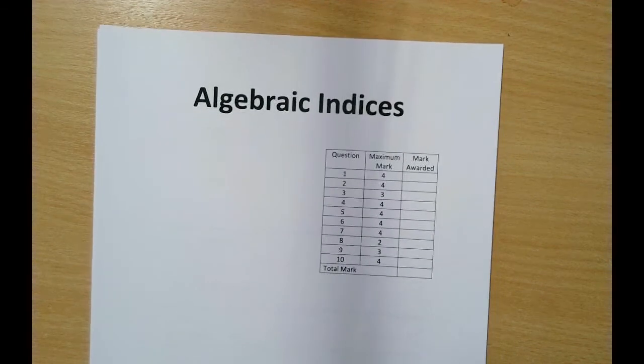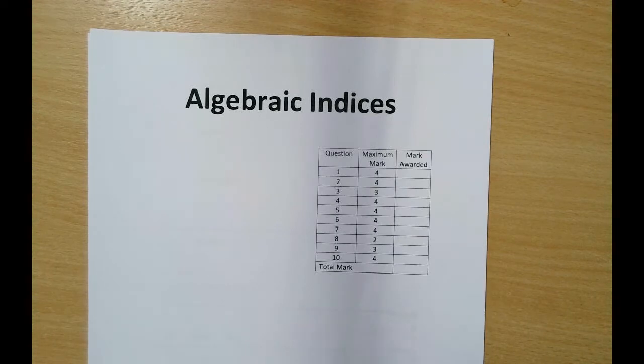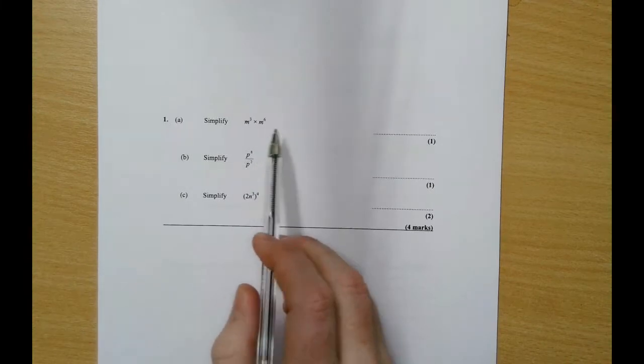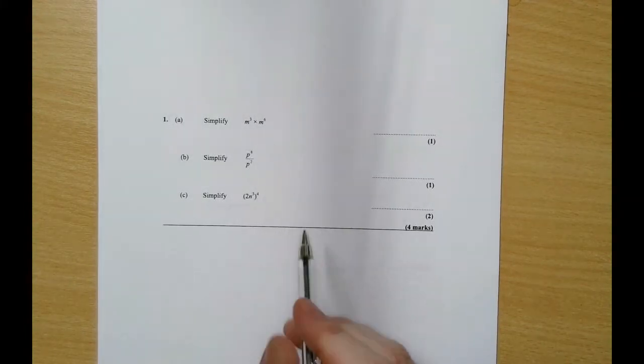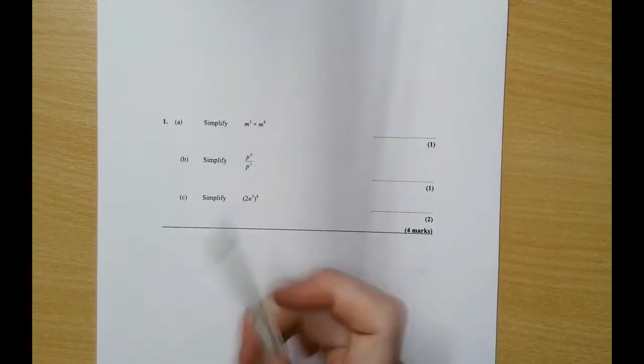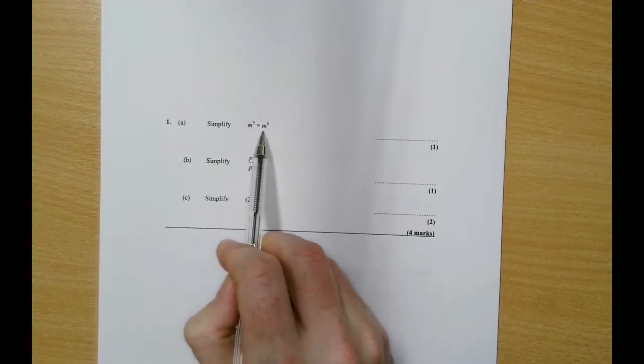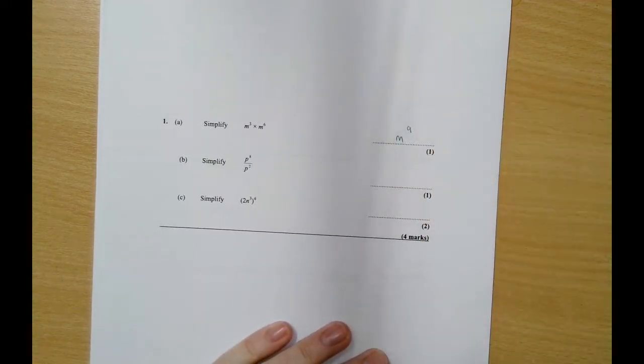This is a mini help video for the topic of algebraic indices. The first questions are bog standard, but they're gonna try and confuse you with numbers that could lead to common misconceptions. If you are multiplying indices together and they have the same base, then you literally just add the indices together. So the first answer is m to the power of 9.